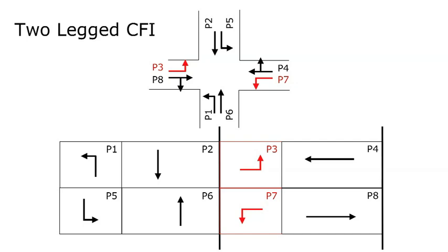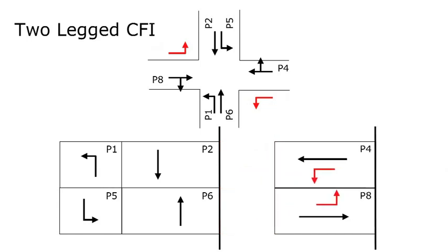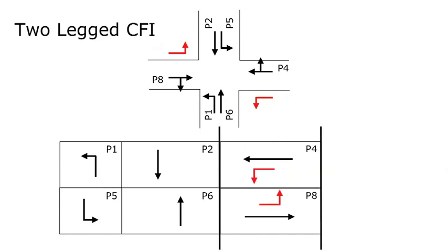Back to an animation I showed earlier: I was trying to show how the left-turn movements are being separated out from the CFI — in this case phases 3 and 7, the left-turn movements in the eastbound and westbound approaches. So I'm taking out the left-turn movements from the main intersection and combining them with phases 4 and 8 in order to reduce one phase from the cycle length.